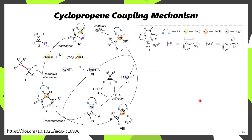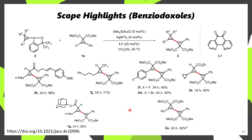A more complicated version of this mechanism is shown here, and if you're interested in looking at it in more detail, you can pause the video. Some scope highlights are shown here, where you don't just get symmetrical products, as different cyclopropenes can be used both for the hypervalent iodine reagent as well as for the cyclopropene coupling partner. A variety of the hypervalent iodine reagents — called benziodoxols — are used here: a wide range of esters, a CF3-containing example, a bis-ester, a mono-ester, a dibenzyl ester, an adamantyl ester, examples with an aryl group, and a cyclopropyl group.